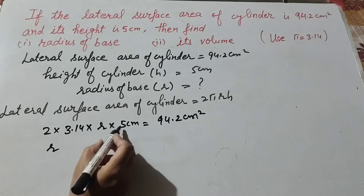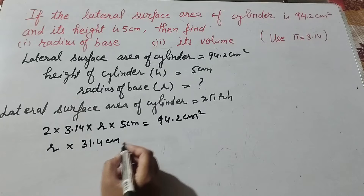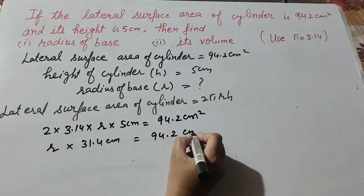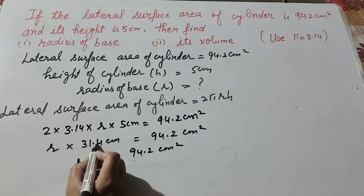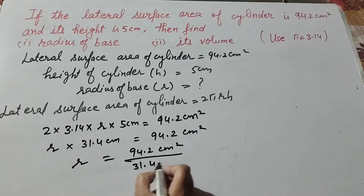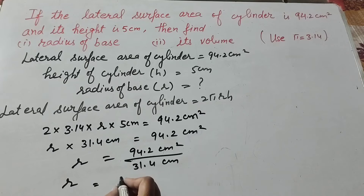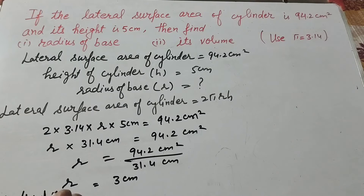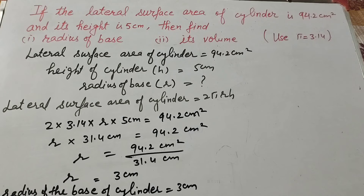So r × 2 × 3.14 × 5 gives us 31.4 centimeter, which equals 94.2 centimeter square. Therefore r = 94.2 / 31.4, transposing to the right-hand side. On dividing, we get r = 3 centimeter. So the radius of the base of the cylinder = 3 centimeter.